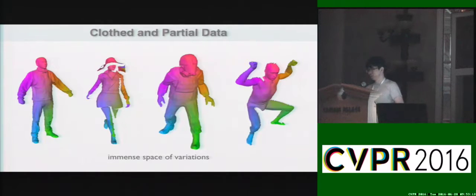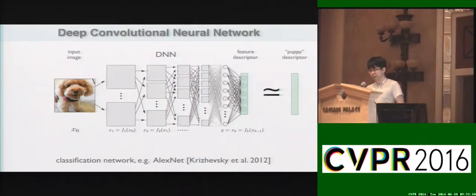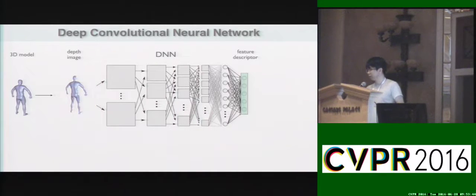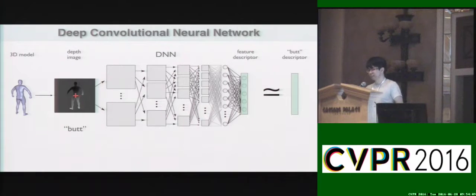How can we handle such a large variation of input? The answer is unsurprisingly a deep neural net. A typical deep neural net uses an image as input and by applying a lot of functions in the neural net, it gives us a feature descriptor describing the content of this image. We can further do a classification by comparing this descriptor with known descriptors with semantic meanings. In our case, our inputs are 3D models, so we need to first render the depth images from the 3D models and pass such depth images into the neural net to get corresponding descriptors. For every point on the 3D model, we obtain depth images centered at that point, and such a descriptor should tell us where it is on the human body.